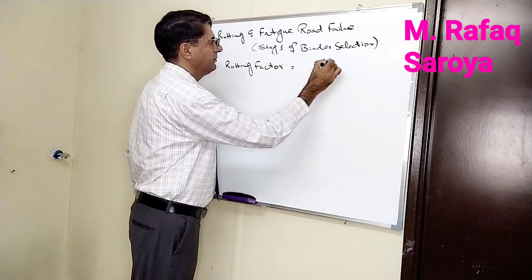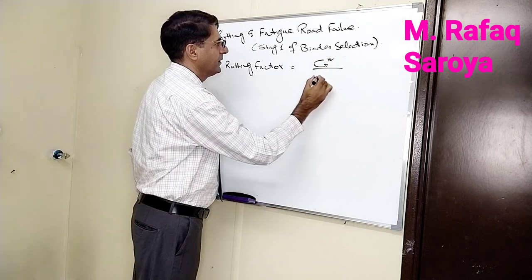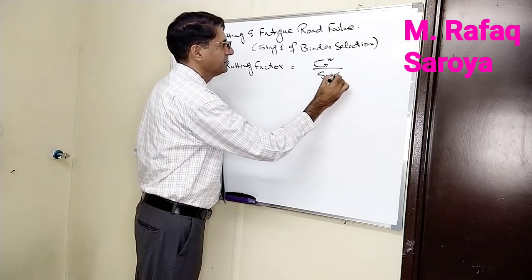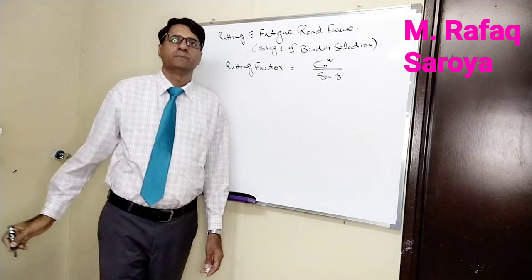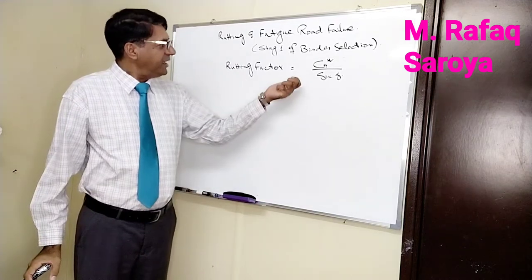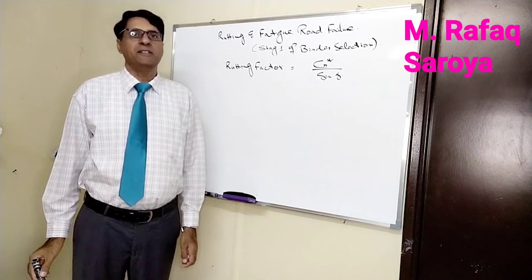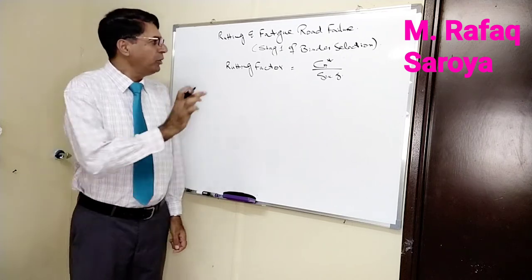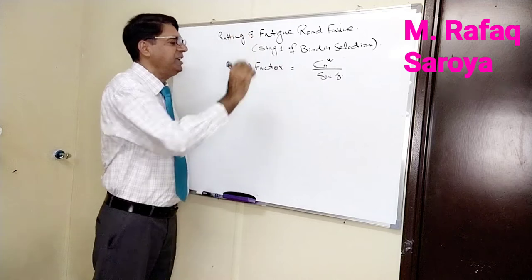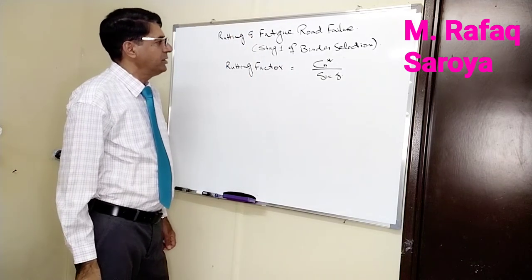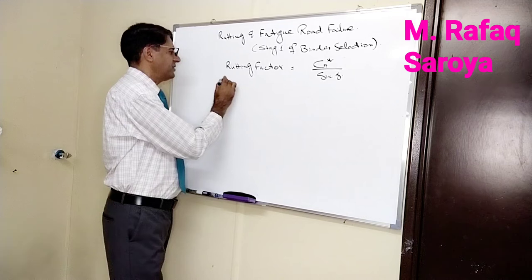The rutting factor is equal to g star by sine delta. This relationship has been used by SHRP and Superpave specification, so we can say it is an indicator used for rutting resistance.